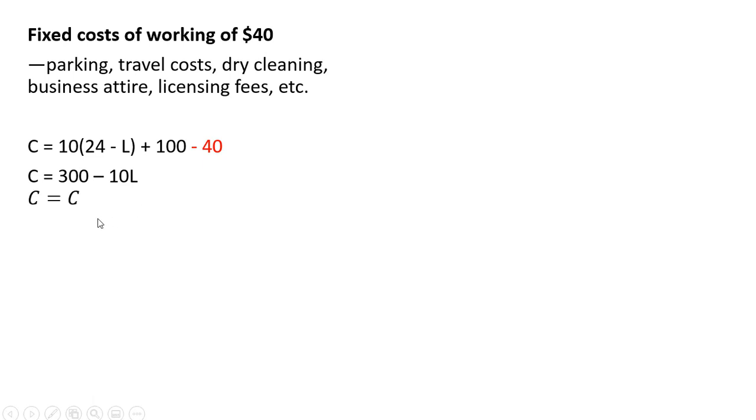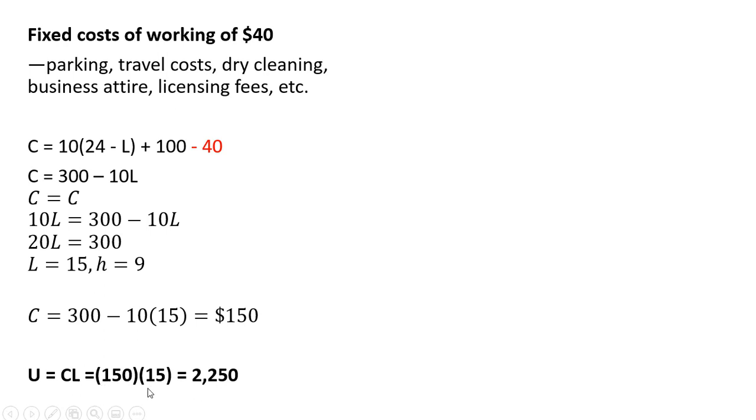And as before, we're going to set the two C equations equal to one another and solve for L. So hours of leisure is 15, implying hours of work is 9. The consumption at 15 hours of leisure or 9 hours of work is $150, and the utility here is $2,250.